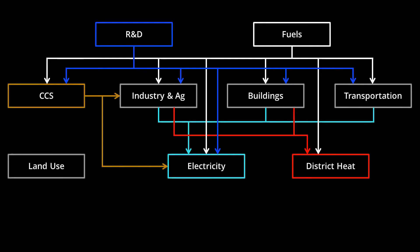The last sector tracked by the EPS handles emissions and sequestration from land use and land use change. This encompasses forestry, deforestation, peat fires, and so forth.